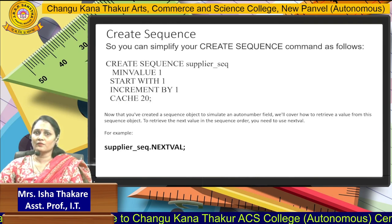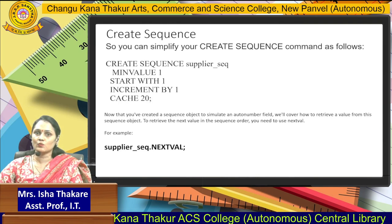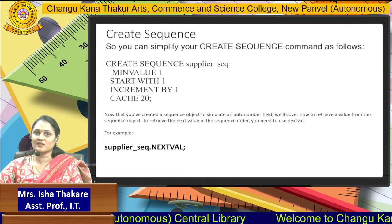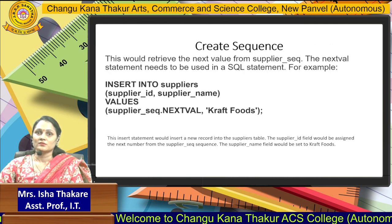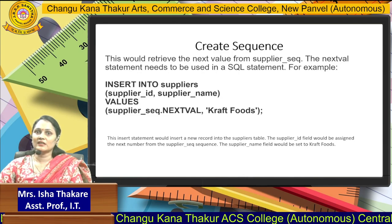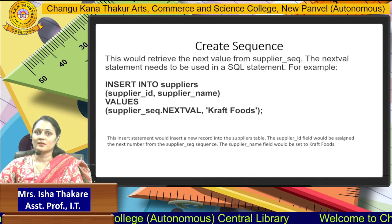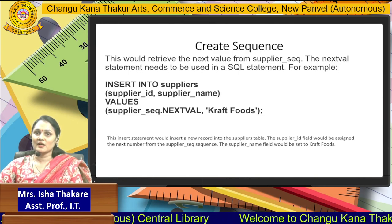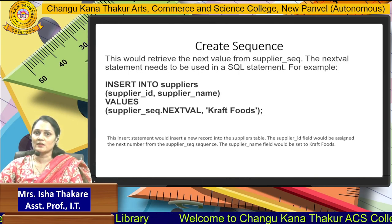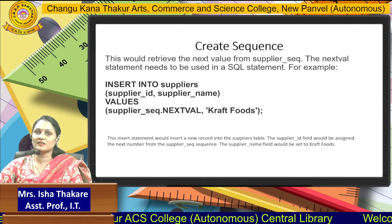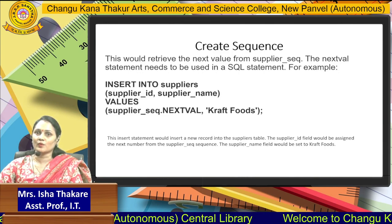To access the value of a sequence, we use the nextval function. supplier_sequence.nextval — the dot operator accesses the value and nextval retrieves the next value. To use this sequence in an INSERT statement: INSERT INTO suppliers (supplier_id, supplier_name) VALUES (supplier_sequence.nextval, 'Crafts Food'). The supplier_id is auto-generated by the sequence, so we don't provide it manually.